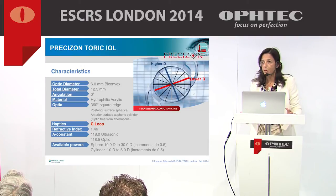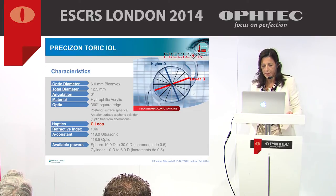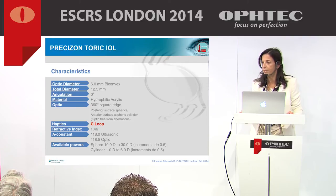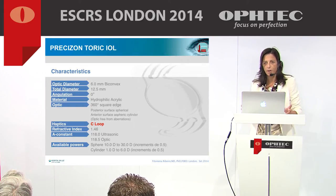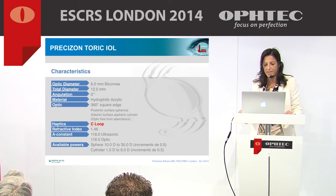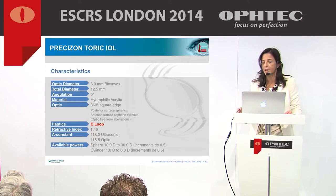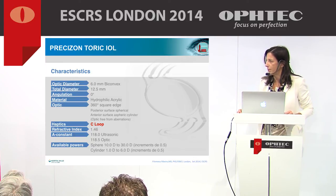Closed-loop haptics are a new addition to the toric IOL market. The loops have a second insertion on the IOL, and this anti-vaulting haptics technology is designed to reduce the effect of capsular compression and gives the IOL stability.